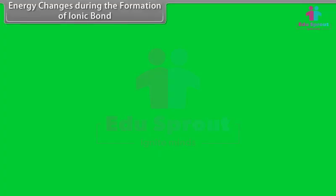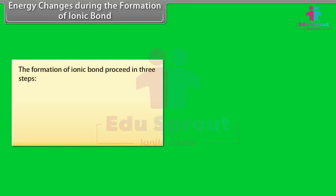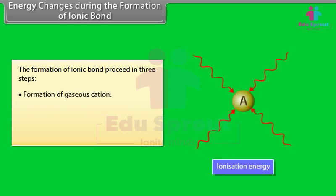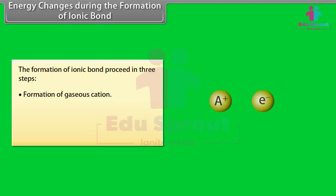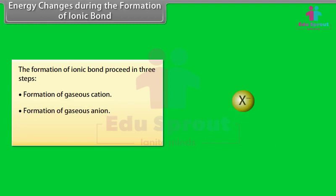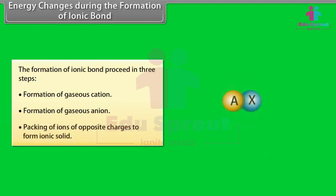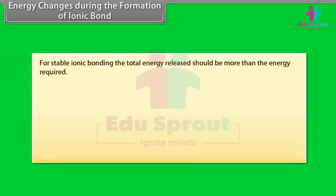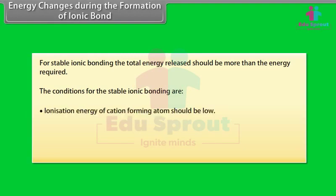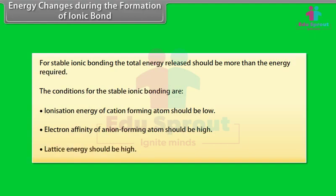The formation of an ionic bond proceeds in 3 steps. Step 1: Formation of a gaseous cation — the energy required is called ionization energy. Step 2: Formation of a gaseous anion — the energy released is called electron affinity. Step 3: Packing of ions of opposite charges to form an ionic solid — the energy released is called lattice energy. For stable ionic bonding, the total energy released should be more than the energy required. Conditions: ionization energy should be low, electron affinity should be high, and lattice energy should be high.